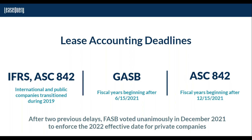In December 2021, the FASB voted unanimously to enforce the 2022 effective date for all private companies, which means starting January 1st, 2022 through December 31st, 2022 is the first year for all other folks to become compliant with ASC 842.